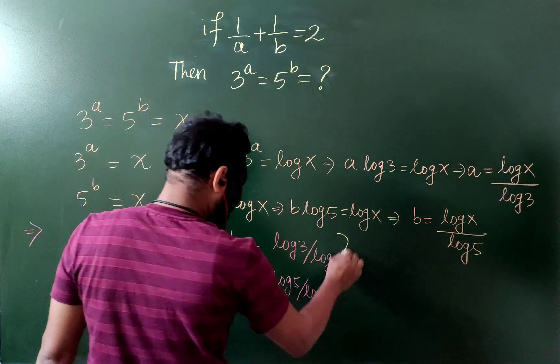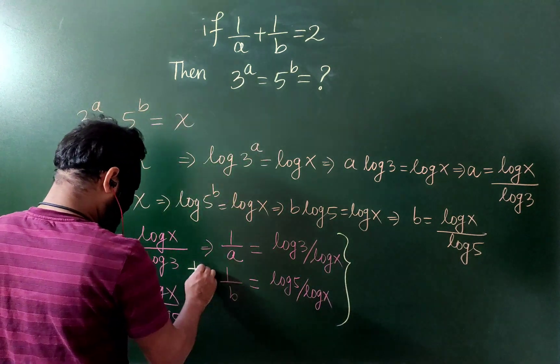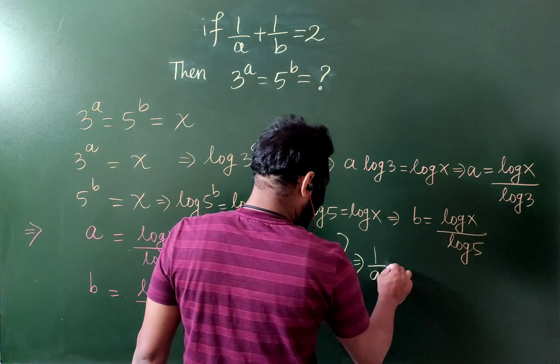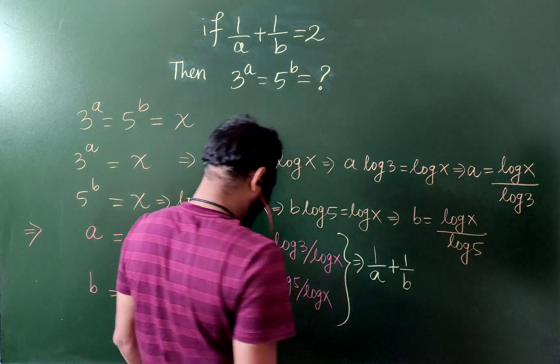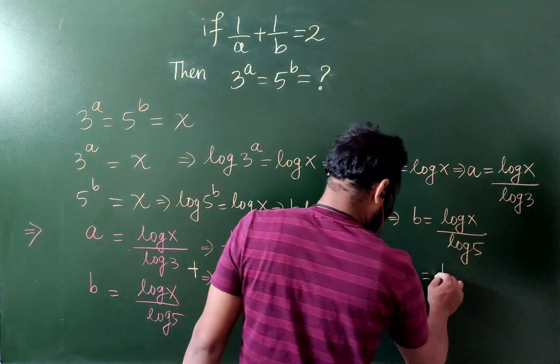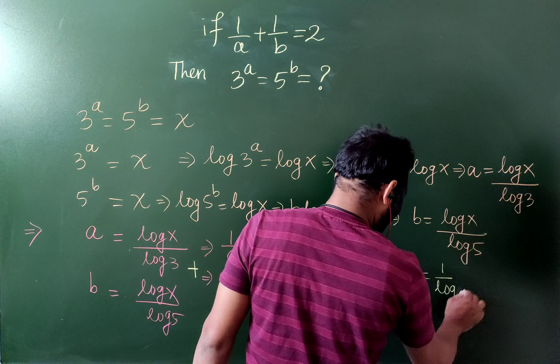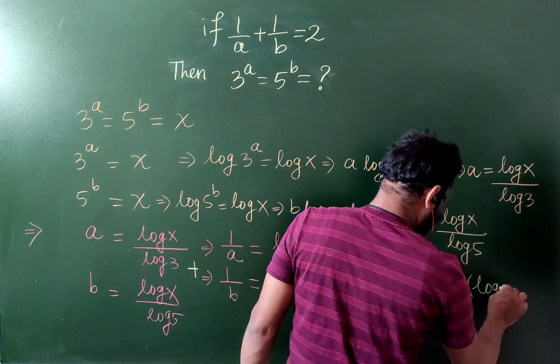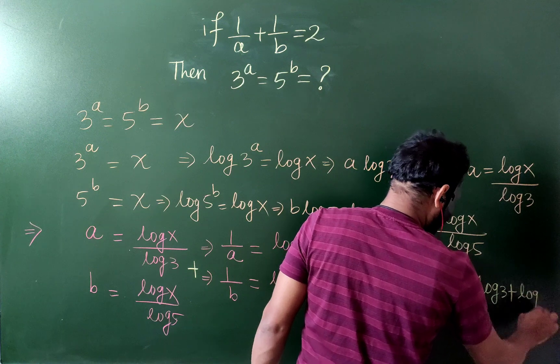Now, if I add both, then this gives me 1 by a plus 1 by b equals to, if I take log x common, 1 by log x times log 3 plus log 5.